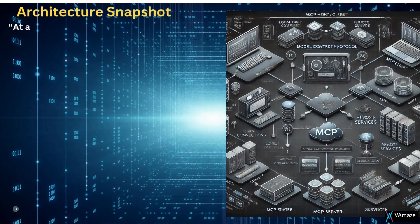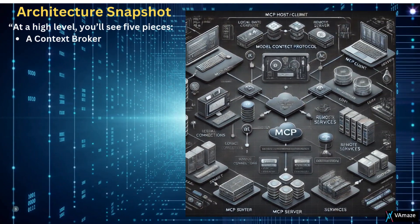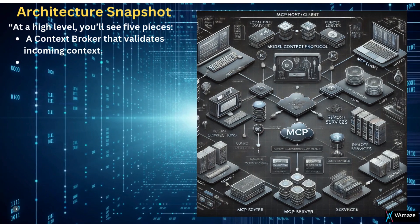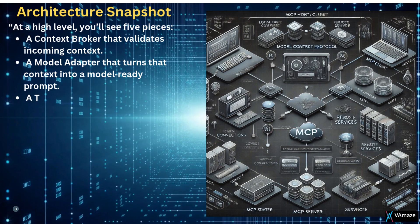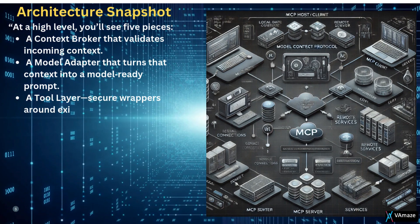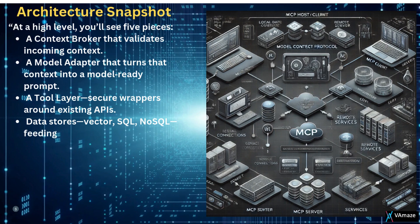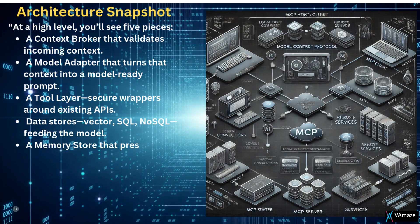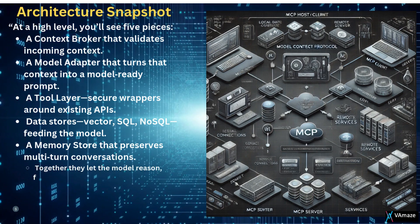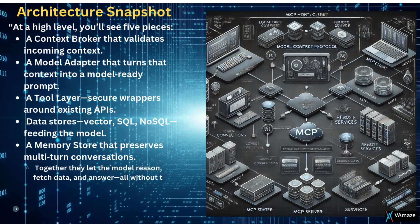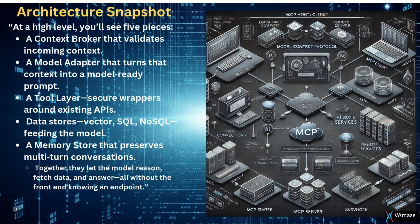Architecture snapshot. At a high level, you'll see five pieces: a context broker that validates incoming context; a model adapter that turns that context into a model-ready prompt; a tool layer with secure wrappers around existing APIs; data stores — vector, SQL, NoSQL — feeding the model; and a memory store that preserves multi-turn conversations. Together, they let the model reason, fetch data, and answer, all without the front-end knowing an endpoint.